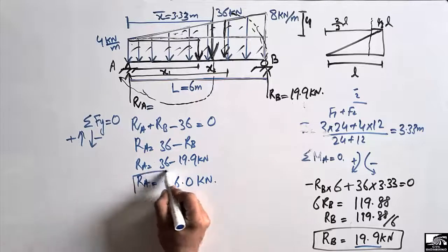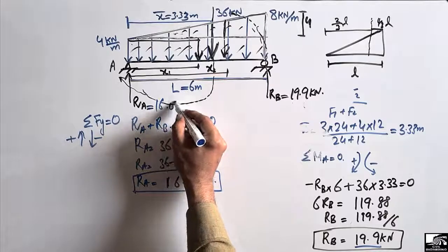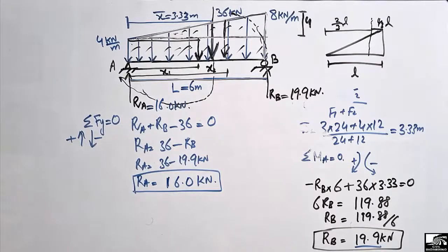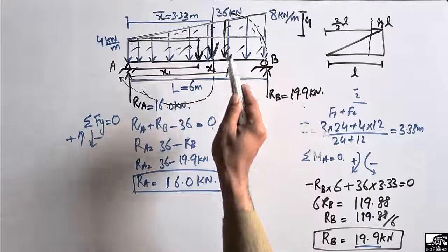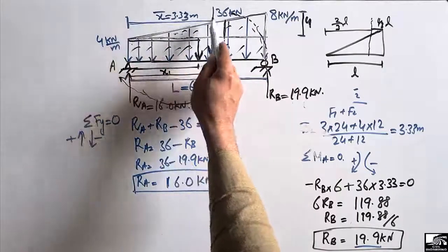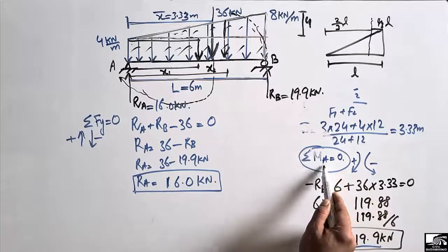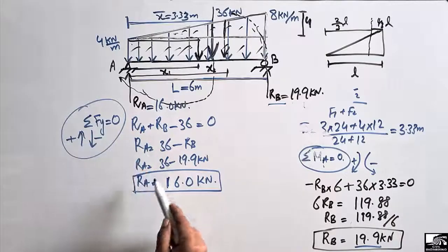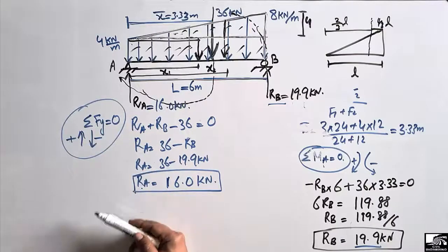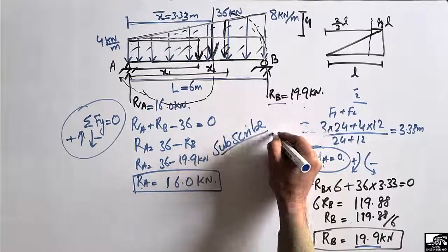So the reaction at support A is 16.0 kN. To summarize: when there is a trapezoidal load, first find the total amount of load, then find the centroidal distance, then use the summation of moments formula to find one support reaction, and use the vertical equilibrium equation to find the other. Hope you guys understand — don't forget to subscribe for more civil engineering videos.